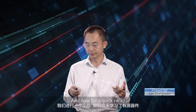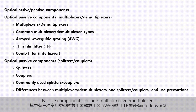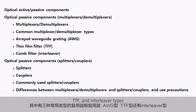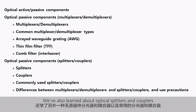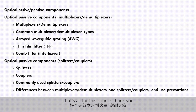To recap: we've learned about active and passive components. Passive components include multiplexers and demultiplexers, which are further classified into AWG, TFF, and interleaver types. We've also learned about optical splitters and couplers, the differences between them and multiplexers-demultiplexers, and their use precautions. That's all for this course. Thank you.